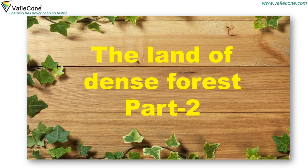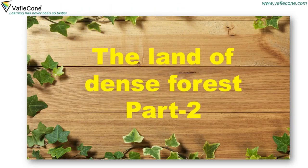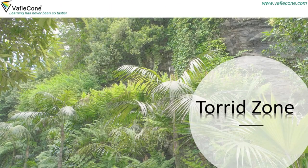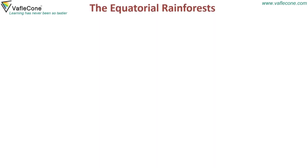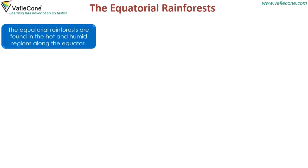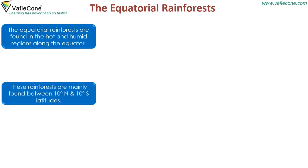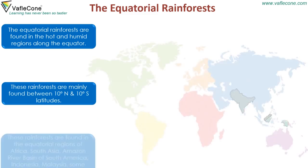The land of dense forest part 2: Torrid Zone. The equatorial rainforests are found in the hot and humid regions along the equator. These rainforests are mainly found between 10 degree north and 10 degree south latitudes.